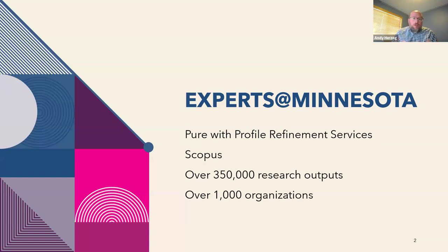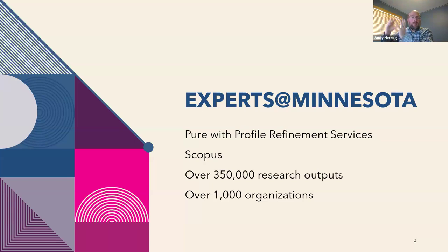For our system, the public version is Experts at Minnesota. We use the back end tool, which is Elsevier's Pure, and we also use their profile refinement services. What that essentially is: it's an automatic harvest of publications from Scopus to our system, and it also connects people to their research at previous institutions. So if I had just started at the University of Minnesota, it would connect me in the Pure system to work I've done previously at other institutions.